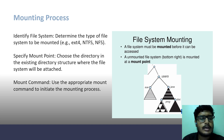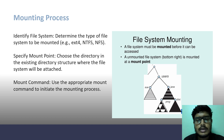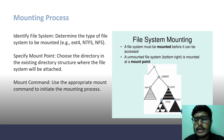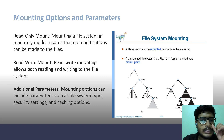Mounting process. Identify file system: Determine the type of file system to be mounted. Specify mount point: Choose the directory in the existing directory structure where the file system will be attached. Mount command: Use the appropriate mount command to initiate the mounting process. A file system must be mounted before it can be accessed.